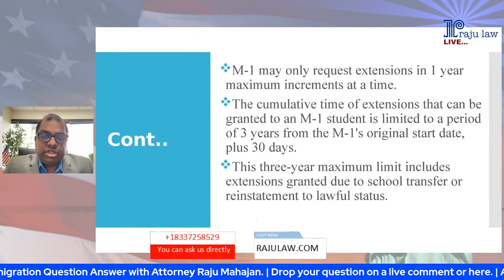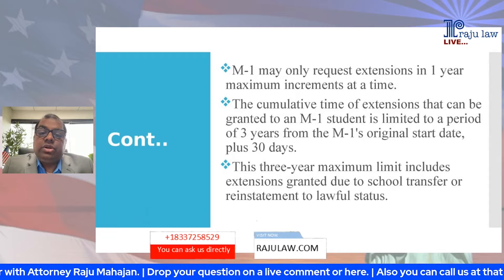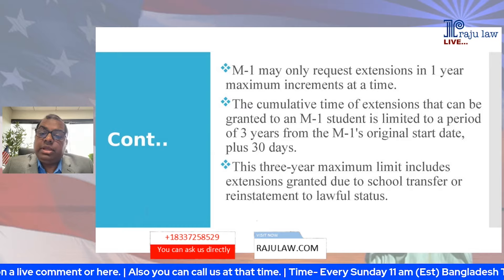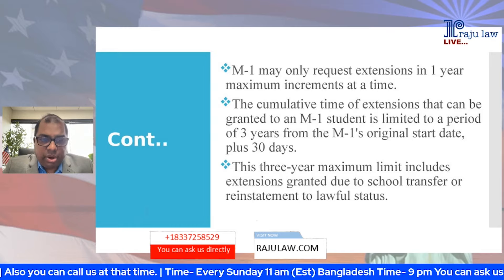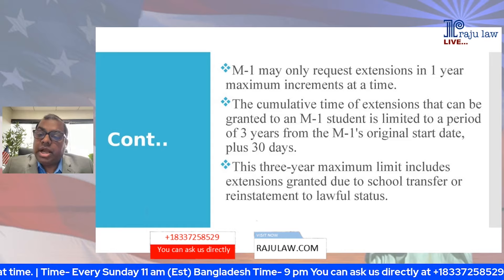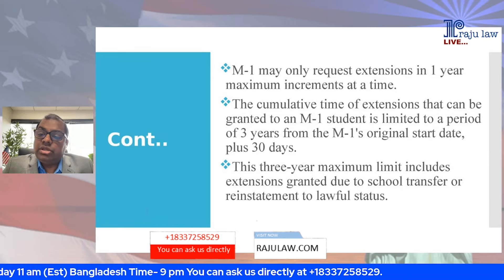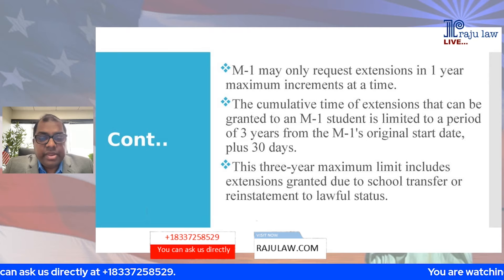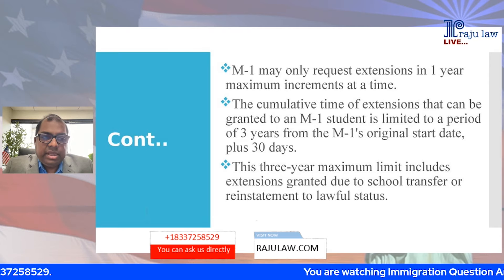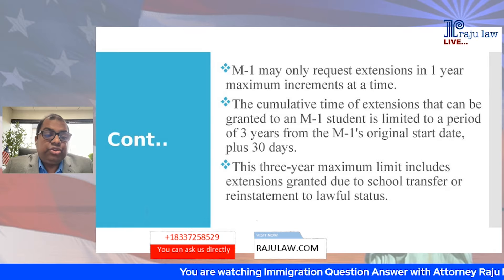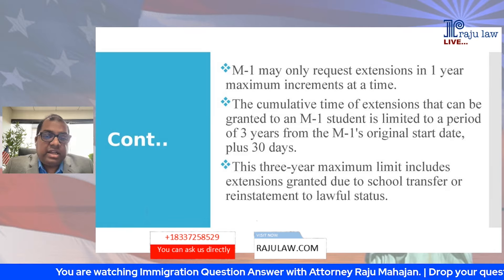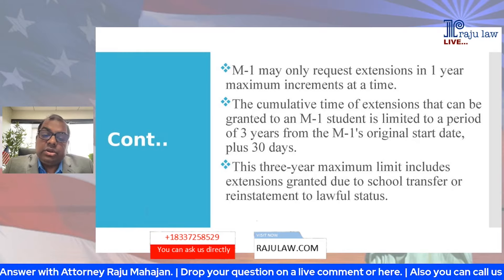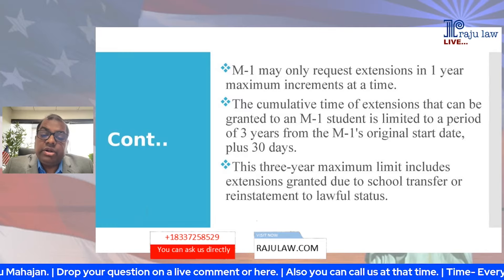For extension of stay, M1 students may only request extension in one-year maximum increments at a time. The cumulative time of extension that can be granted is limited to a period of three years from the M1's original start date plus 30 days. Unlike F1, which has unlimited extension time, M1 has a total three-year maximum limit, and this includes extensions granted due to school transfers or reinstatement to lawful status.